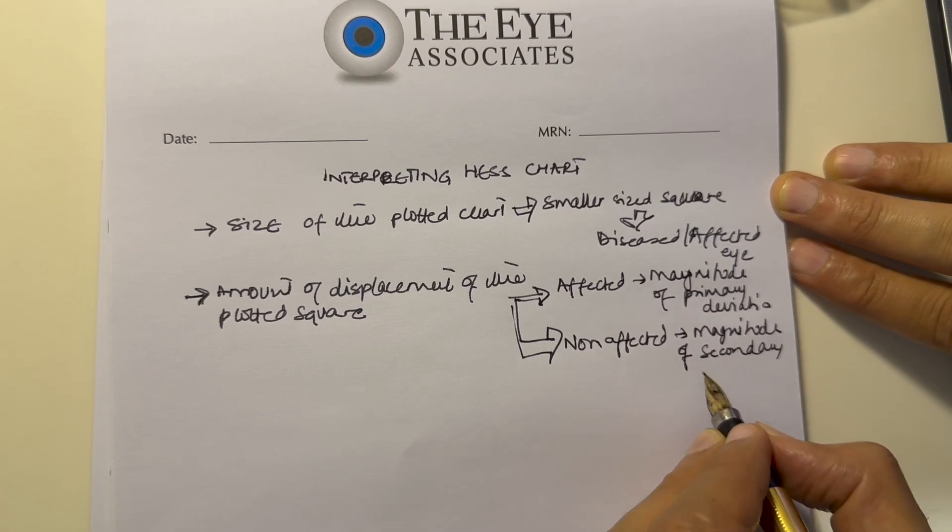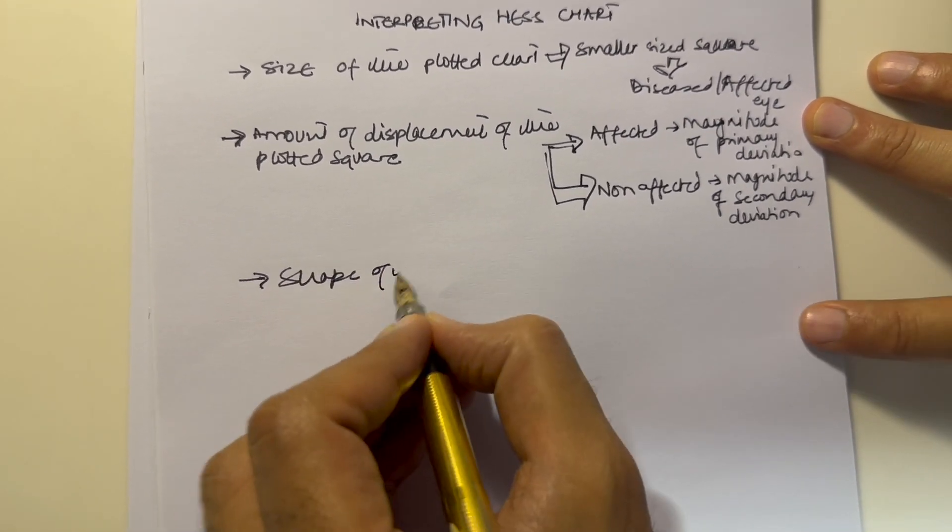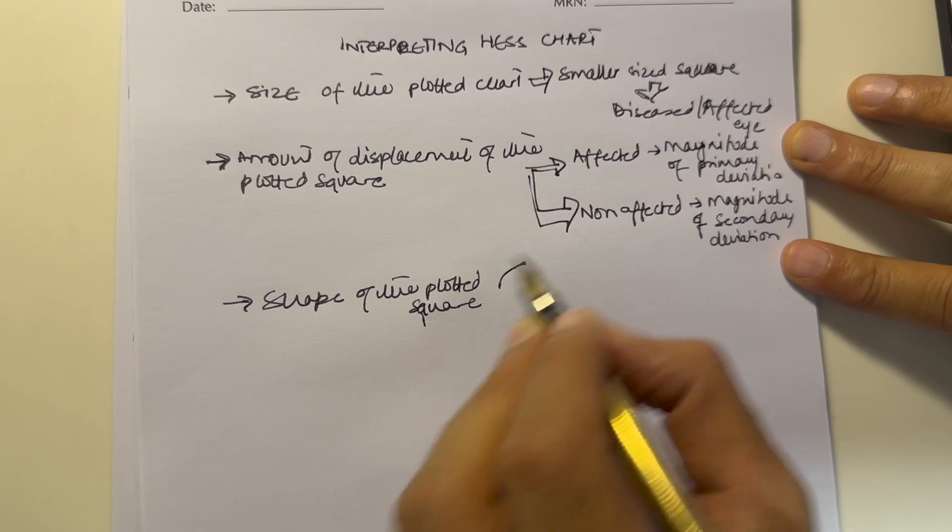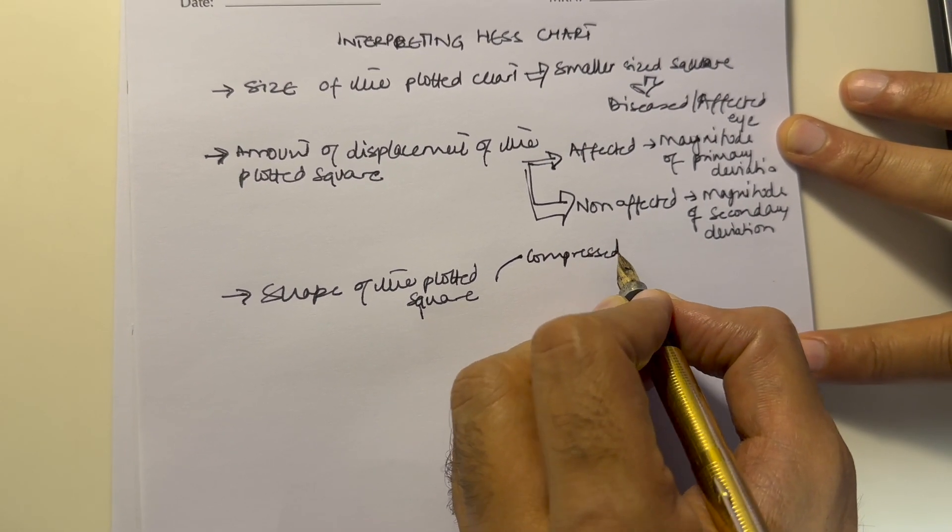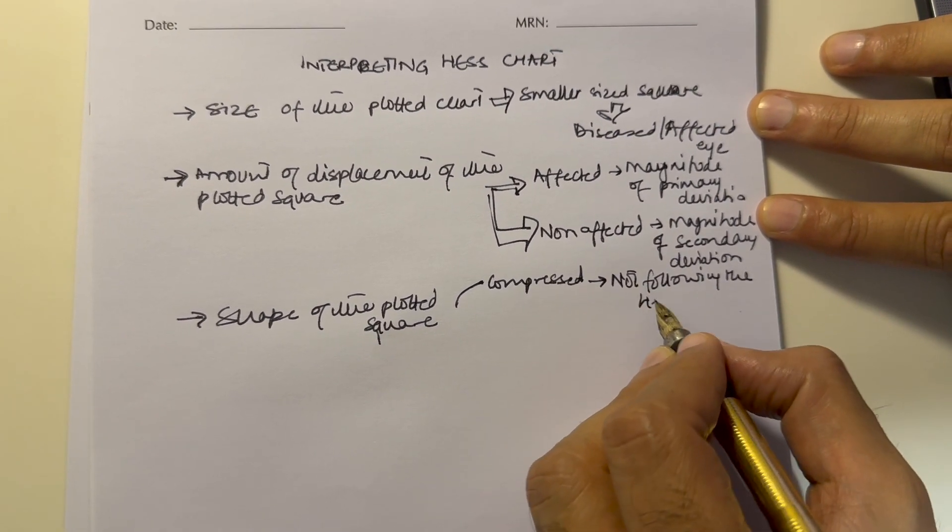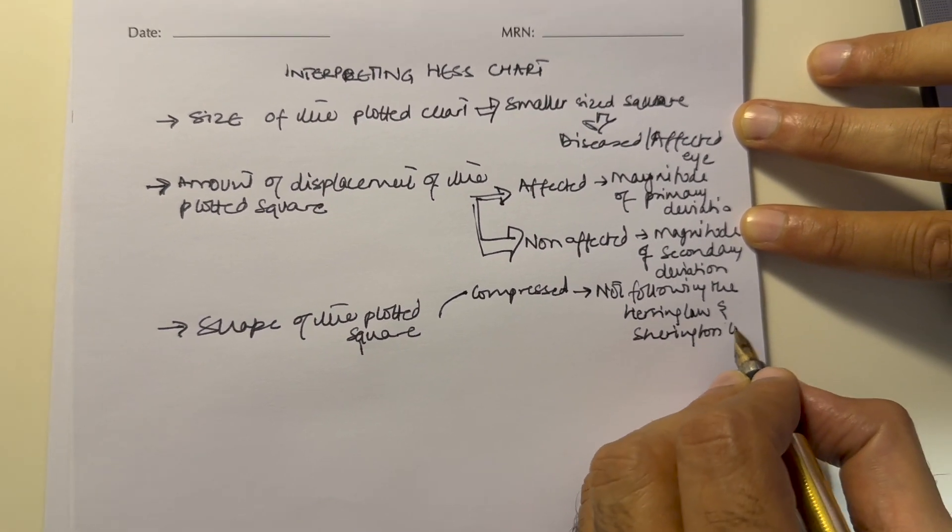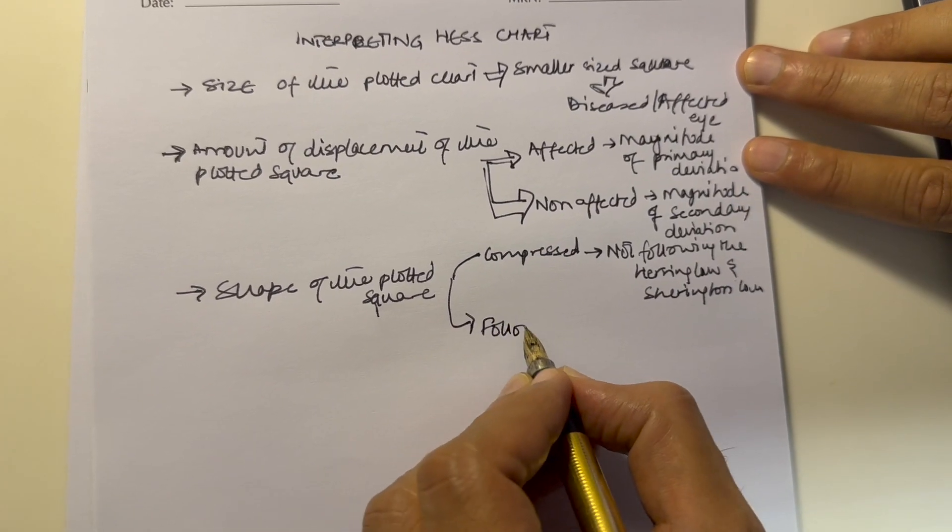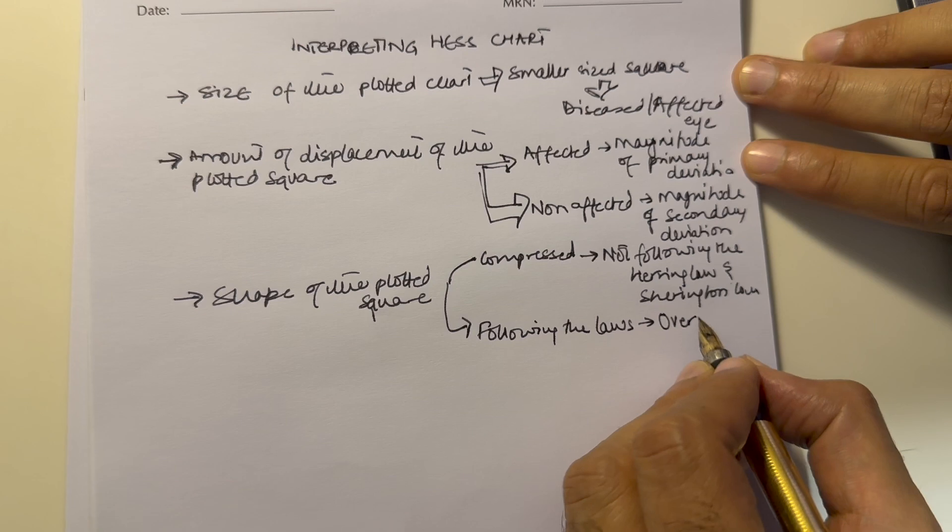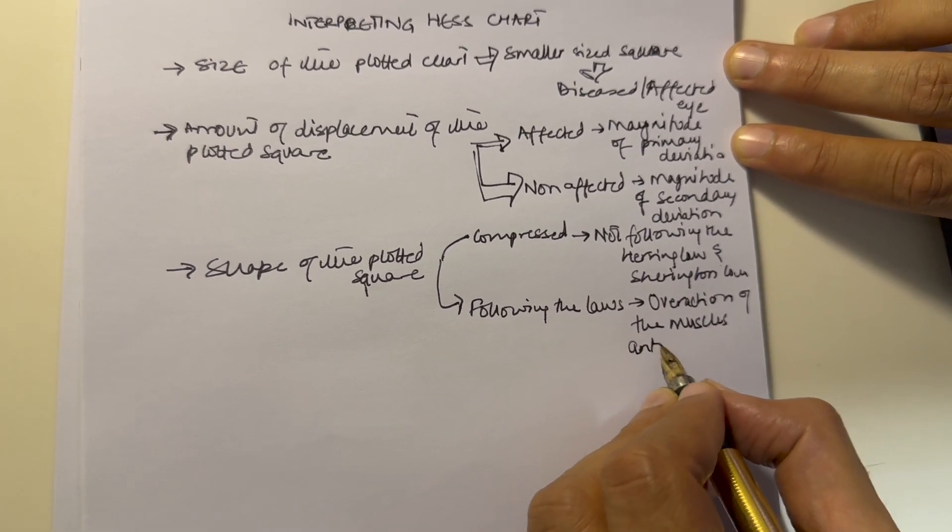The third thing to see is the shape of the plotted chart. It could either be compressed, meaning thereby it is not following Hering's or Sherrington's law, or it could be following the two laws and thus showing over action of the muscles which are antagonist to the muscle which is under acting.